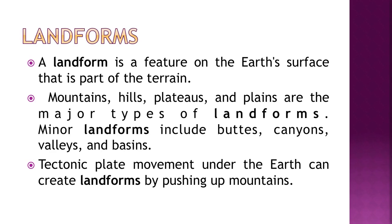What do we understand by the term landforms? A landform is a feature on the earth's surface that is a part of the terrain. Mountains, hills, plateaus and plains are the major types of landforms. Minor landforms include buttes, canyons, valleys and basins. Tectonic plate movement under the earth can create landforms by pushing up mountains.